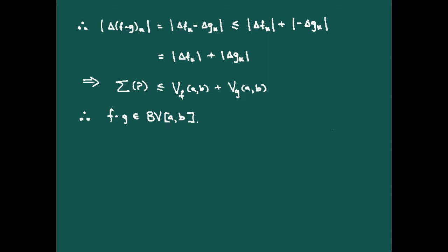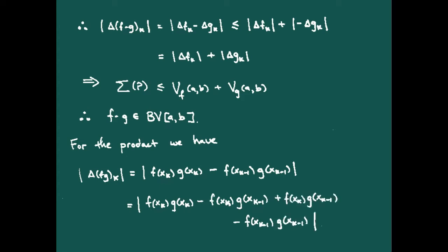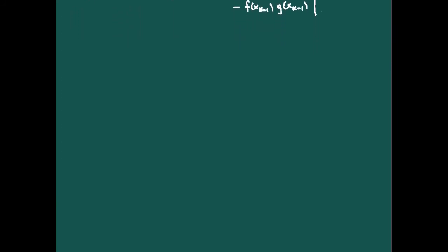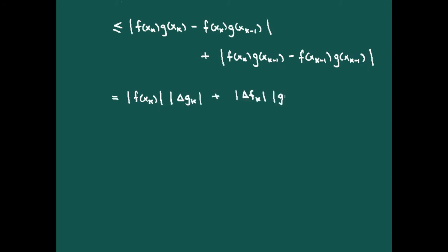Now, what about the product? Looking at Δ(fg)_k, we write out the definition and use the familiar trick from Calculus 1 of adding and subtracting an expression — specifically subtracting f(x_k) · g(x_{k-1}) inside. Applying the triangle inequality, we separate this into |f(x_k)| · |Δg_k| plus |Δf_k| · |g(x_{k-1})|.